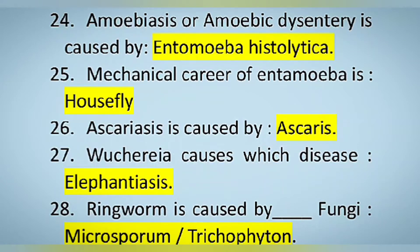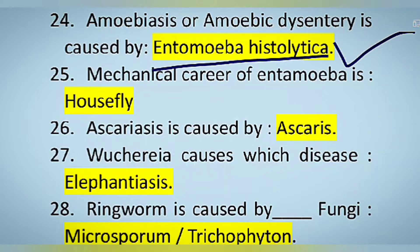Amoebic dysentery is caused by Entamoeba histolytica. Note that in this video I have not written it in italics, but keep in mind that scientific names are always written in italics.